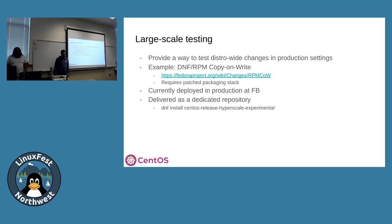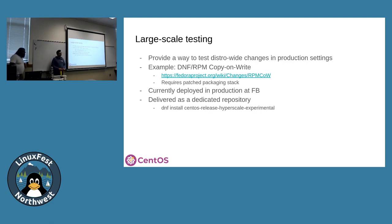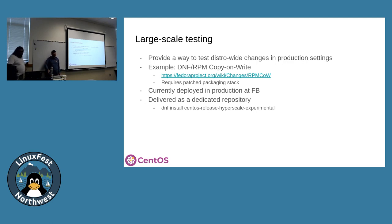The RPM copy-on-write work is actually deployed in production at Meta from a dedicated experimental repo. It's not delivered as part of the standard Hyperscale repos because it's in active development and requires Btrfs as your filesystem — and it's not just a single package, it's the entire packaging stack: RPM, DNF, libdnf, librepo, and all of that. We use the experimental repository for other things that aren't quite ready or are in active development. It does work — it's even running at home.